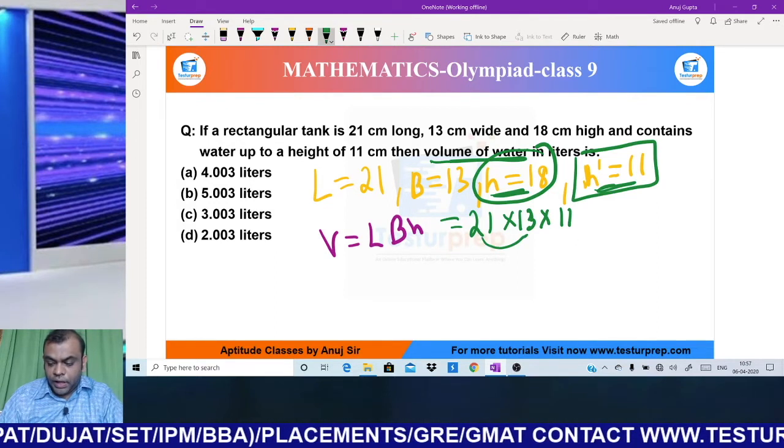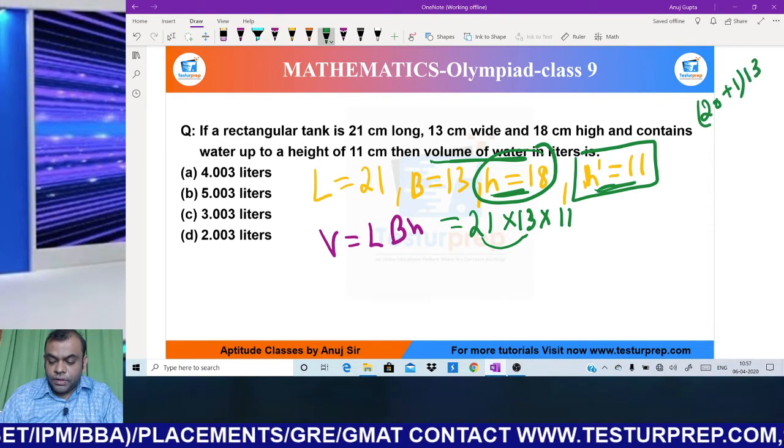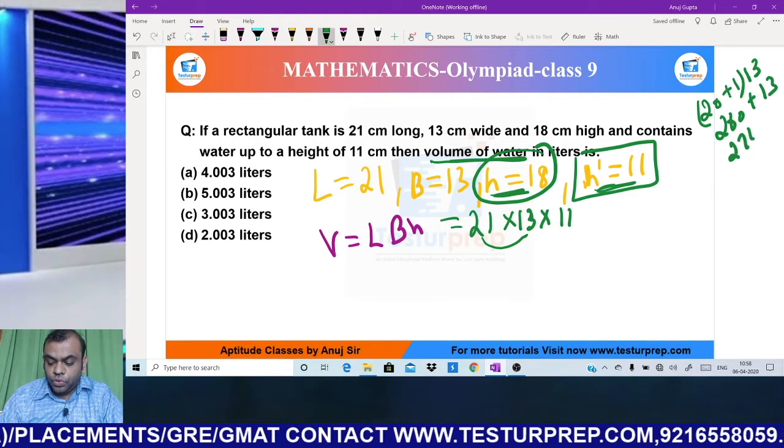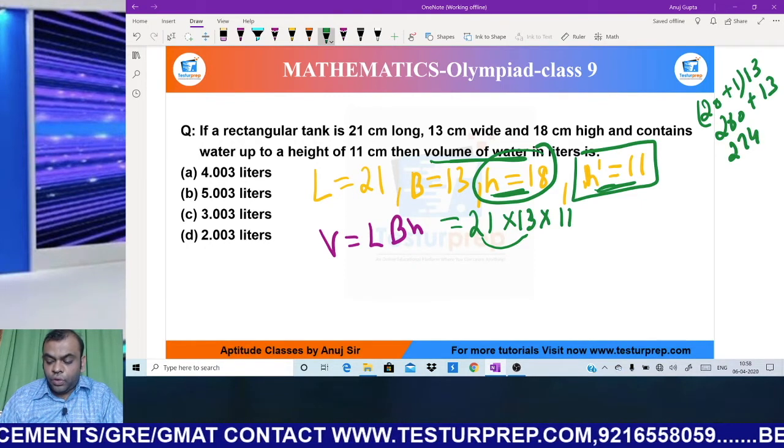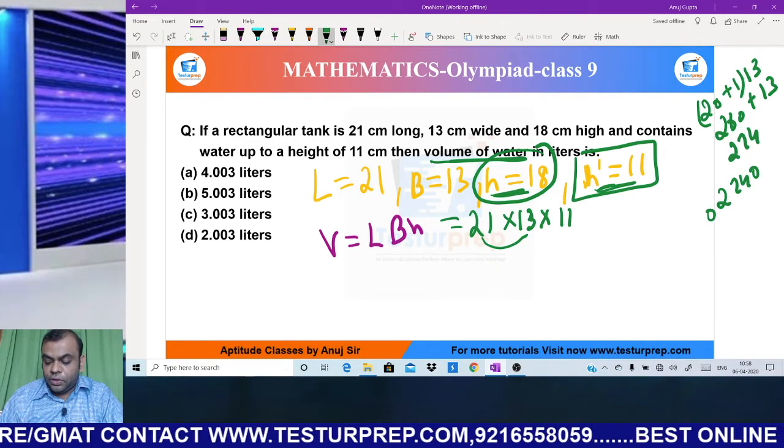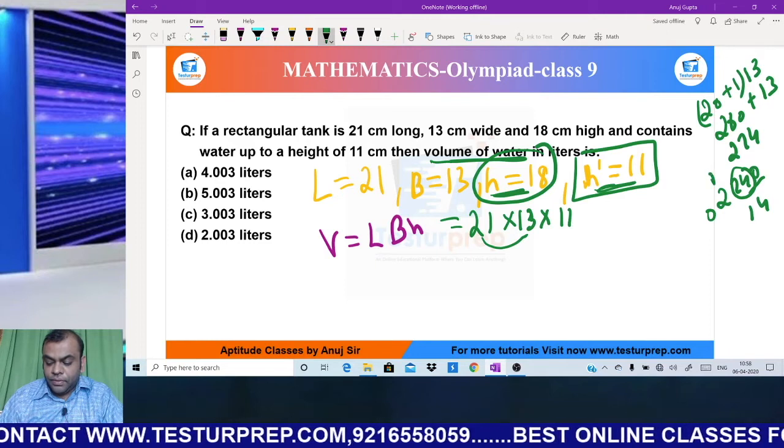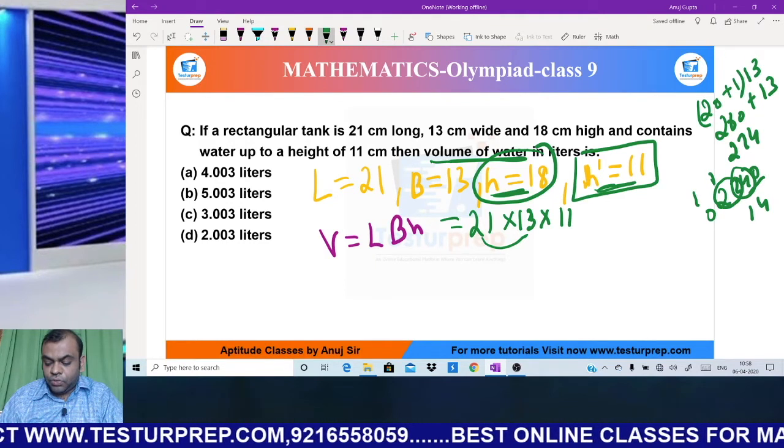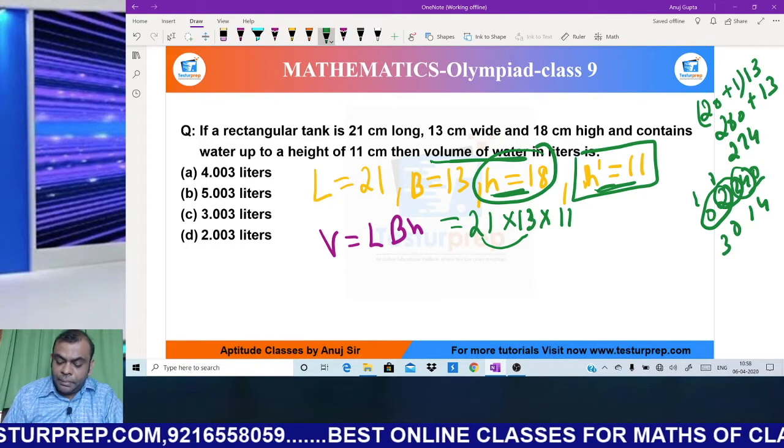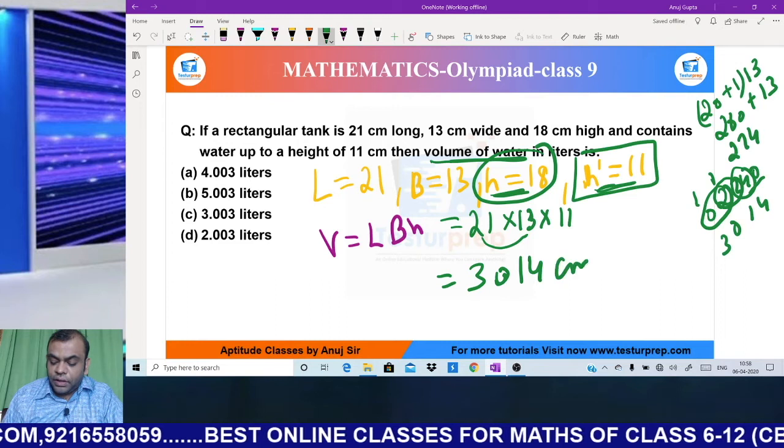Now let's solve it. 21 × 13 can be done as (20+1) × 13 = 260 + 13 = 273. Now multiply 273 by 11 using Vedic math: write 0, then 4, 4+7=11 (write 1 carry 1), 7+2+1=10 (write 0 carry 1), 2+0+1=3. So the total volume is 3,014 cm³.